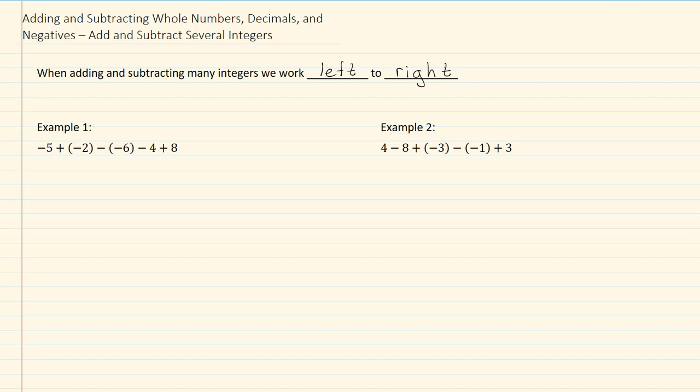First, we want to simplify any double signs that we come across. So in example one, there's two of them, and we'll rewrite this as negative five minus two plus six minus four plus eight.